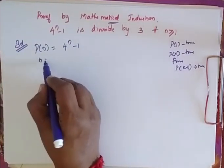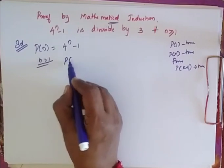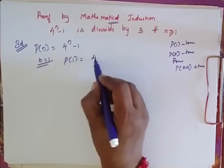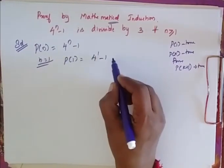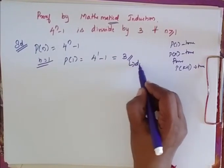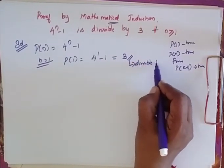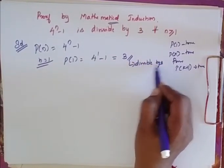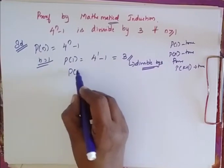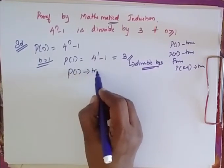So when n is equal to 1, P of 1 is equal to 4 power 1 minus 1, which is equal to 3, which is divisible by 3. So I say that it is true for P of 1.